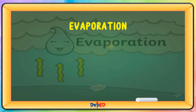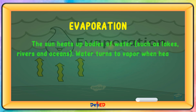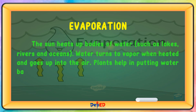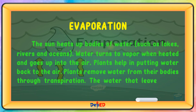Evaporation: The sun heats up bodies of water, such as lakes, rivers, and oceans. Water turns to vapor when heated and goes up into the air. Plants also help in putting water back into the air — they remove water from their bodies through transpiration, and that water goes to the air too.